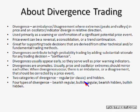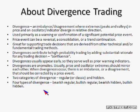There are two categories of divergence. Number one: regular or classic divergence. Number two: hidden divergence. Within these two main categories, there are four types: bearish regular, bullish regular, bearish hidden, and bullish hidden.